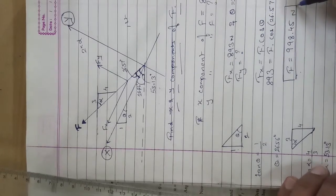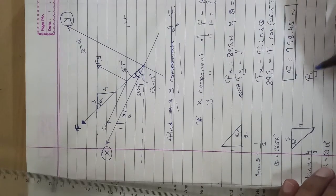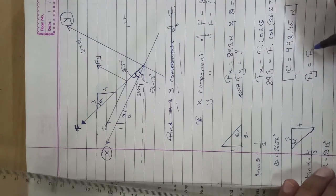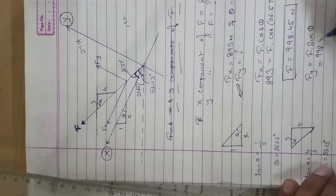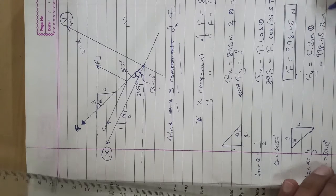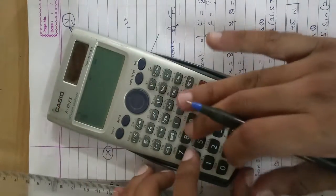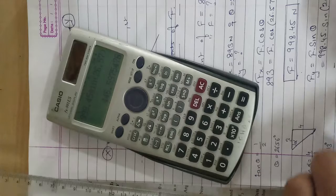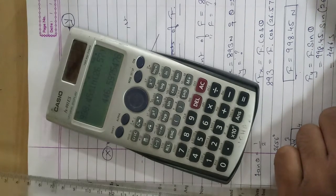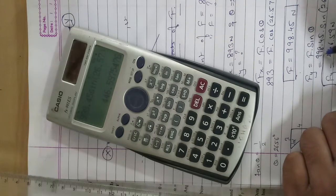What do you need to find? Not F — you need to find Fy. So apply the formula for Fy: Fy equals F sin theta. F is 998.45 Newton and the angle is 26.57 degrees. So Fy equals 998.45 times sin 26.57, which gives Fy as 446.59 Newton.